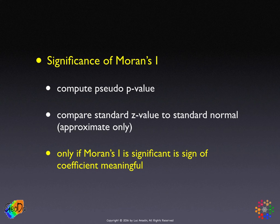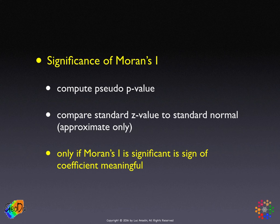The sign of Moran's I is only meaningful when the statistic is actually significant. When the statistic is not significant, all that means is that we don't have sufficient evidence to reject the null hypothesis of spatial randomness. To say there is positive or negative spatial autocorrelation in that case doesn't really make sense, because under spatial randomness there is no such thing as a sign of a spatial autocorrelation coefficient. When the coefficient is not significant, it basically means there's nothing we can say.